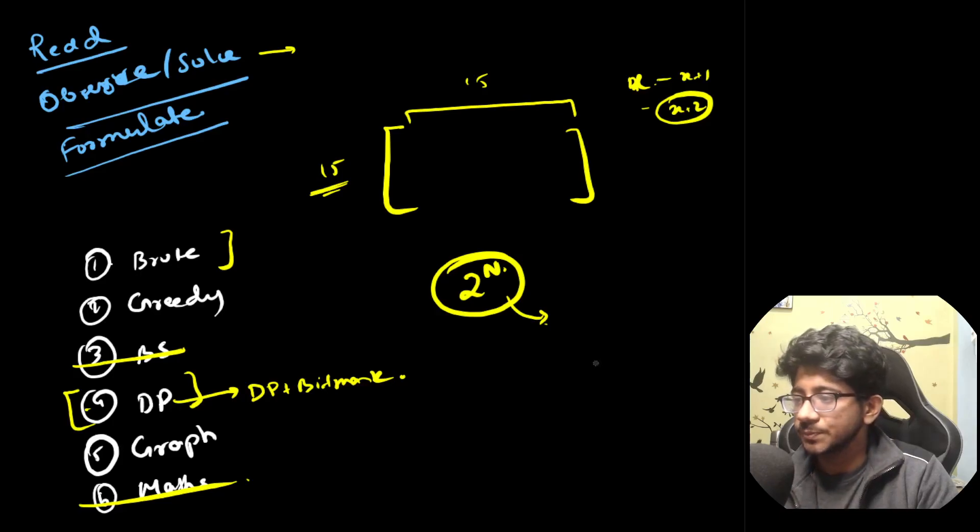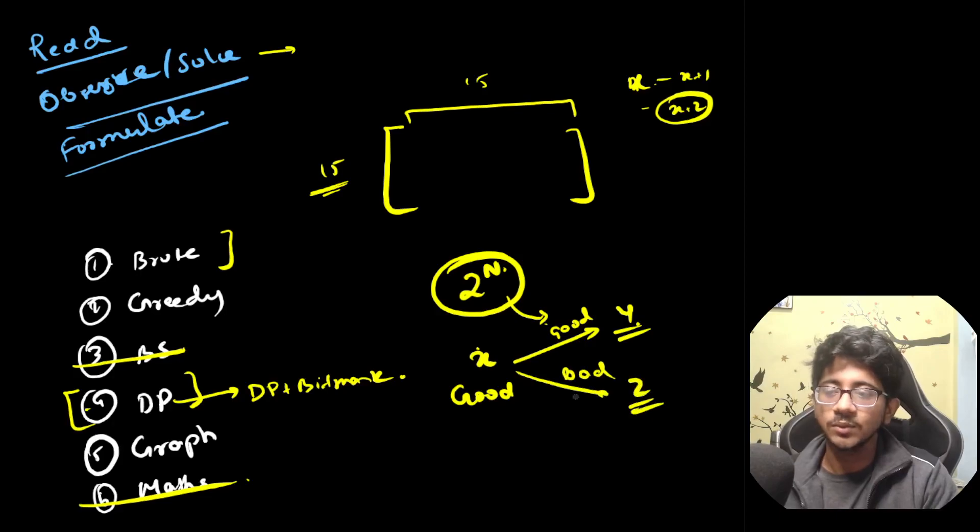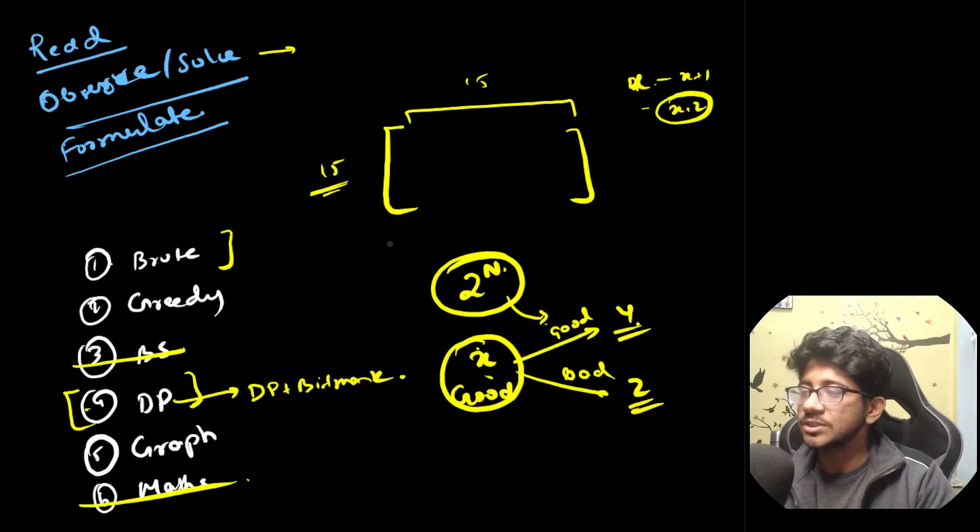So bad person can lie and tell truth. So there is no information over there. Good ones information should be correct. So if X is good and he says good to Y, then Y has to be good. And if he says bad to some Z, then Z has to be bad. This is the only thing that needs to be checked. So only the information of good people matter.